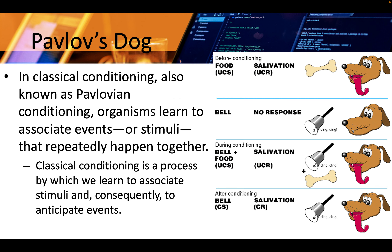In classical conditioning, also known as Pavlovian conditioning, organisms learn to associate events or stimuli that repeatedly happen together. Classical conditioning is a process by which we learn to associate stimuli and, consequently, to anticipate events. And this is the original experiment by Pavlov.